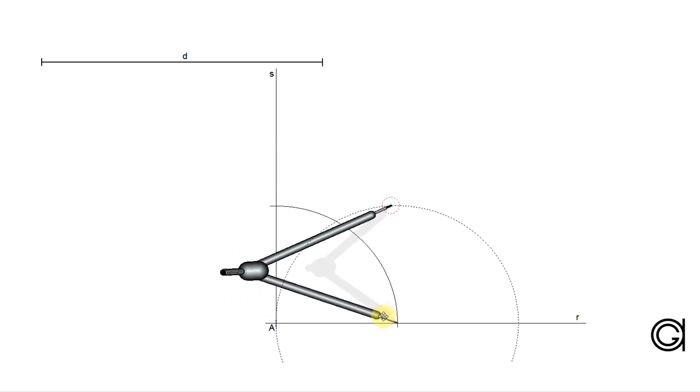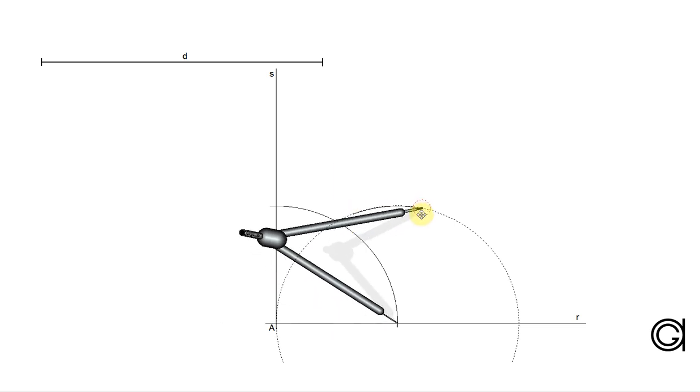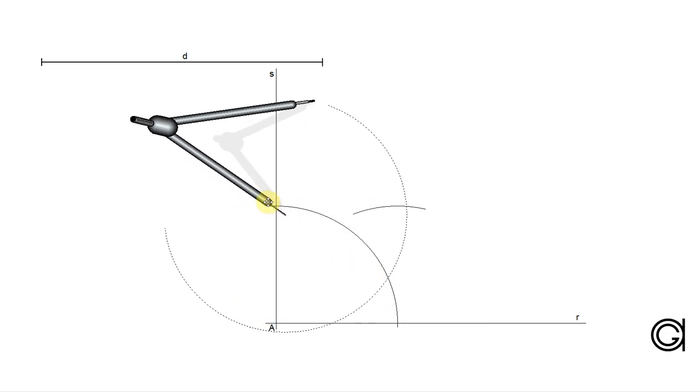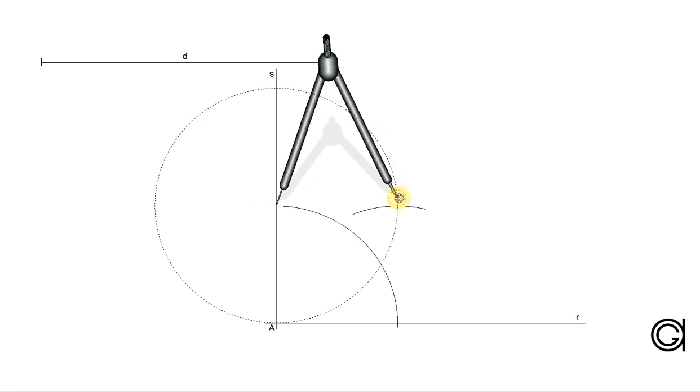With the same radius, we set our compass on the intersection point and scribe an arc. Then setting the compass on the other intersection point, we scribe another arc to cut our previously drawn arc.